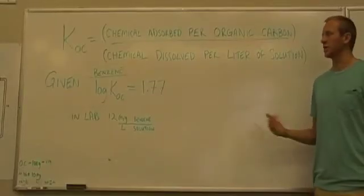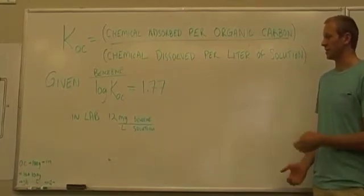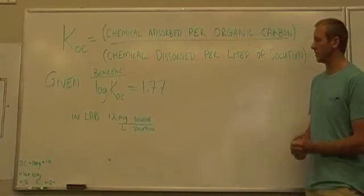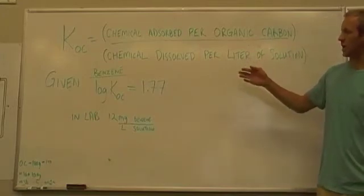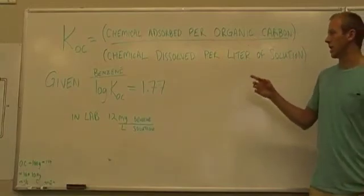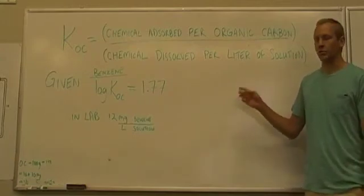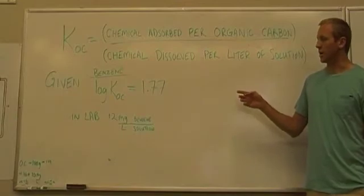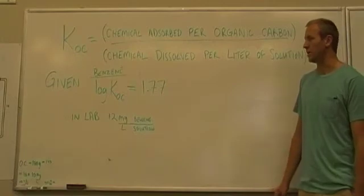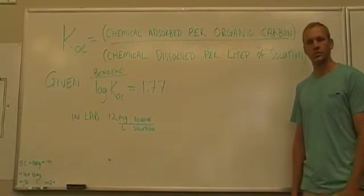So now for our example problem, we'll be looking into a lab experiment and analyzing some data from our lab and also using information that we've gotten from the EPA website. So first, the equation that we said before, KOC equals the chemical absorbed per organic carbon over the chemical dissolved per liter of solution. So in the EPA website, they give a table saying that the log of the KOC value equals 1.77. And in our lab experiment, you have 12 milligrams of benzene per liter of solution.